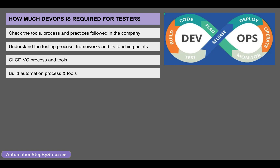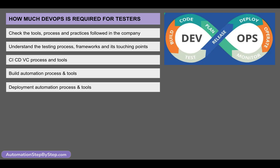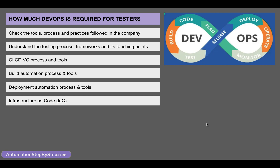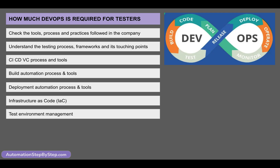You also have to understand the build automation process and tools — what tools are used, and what the process is if they are using Maven, Gradle, or other build automation tools. You should have knowledge of that. Then there is the deployment automation process and tools — how is deployment happening and what tools are used? They may also be using infrastructure as code, where scripts and code are created for infrastructure management. You can understand that process as well, along with the test environment management process and tools.